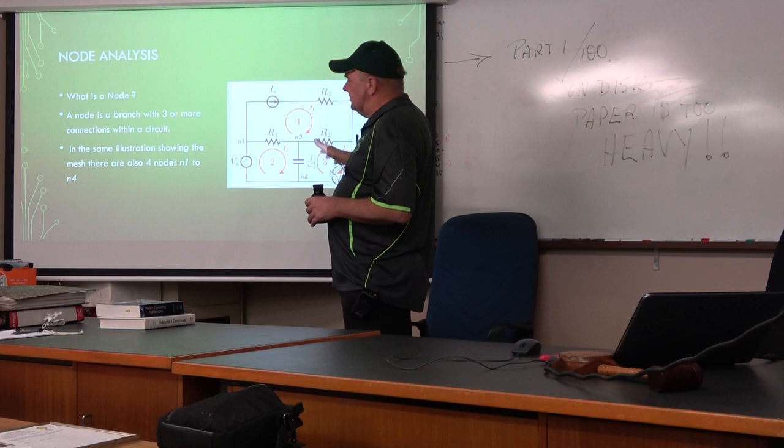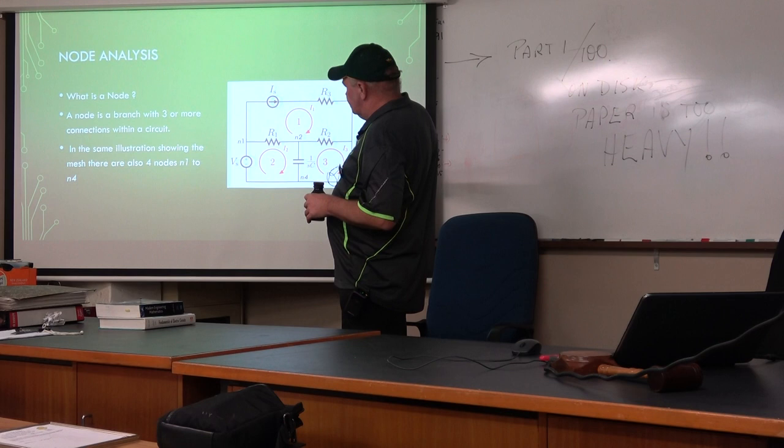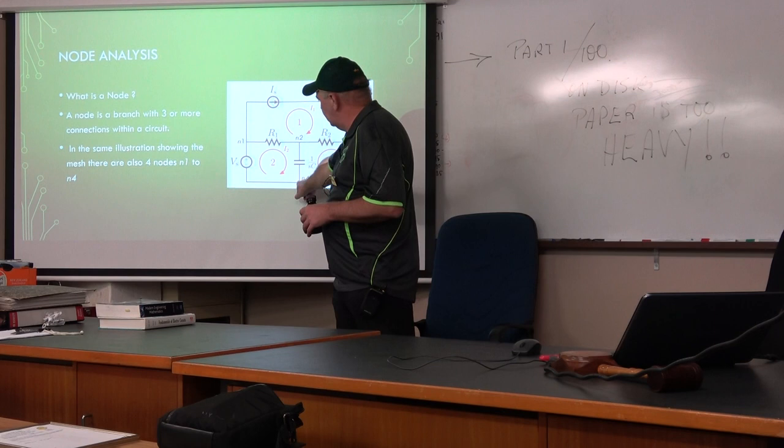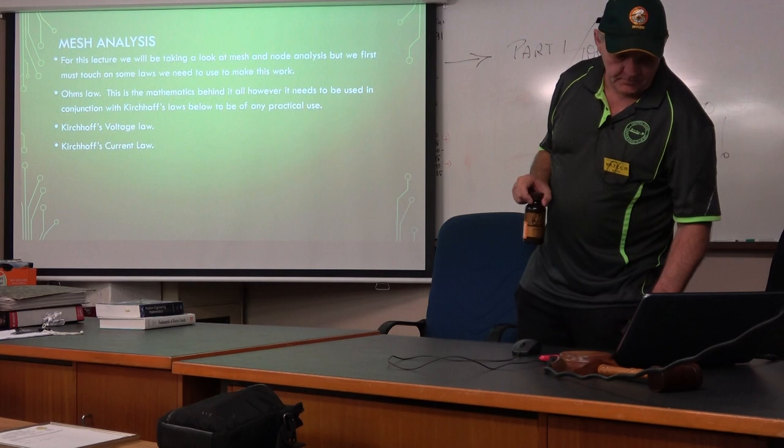What is a node? Same drawing. A node is a branch with three or more connections within a circuit. The same illustration shows the same circuit with nodes N1 to N4. You've got a node here, here, here, and here — those are your nodes, those are your branches.